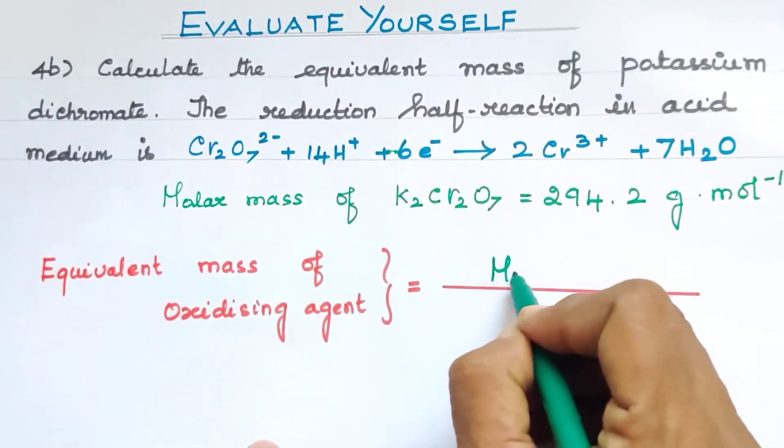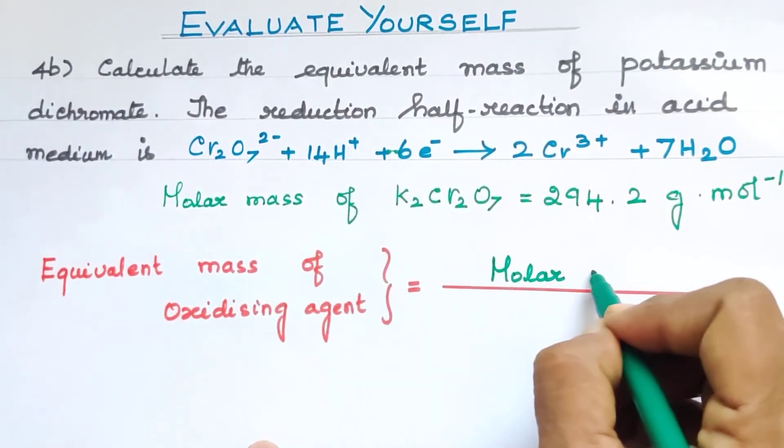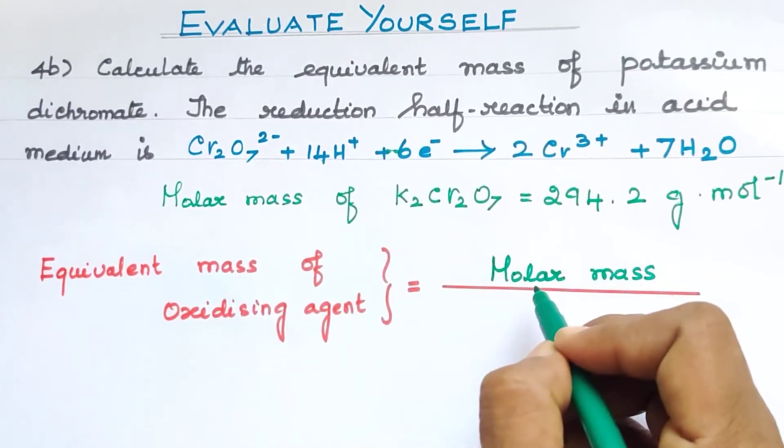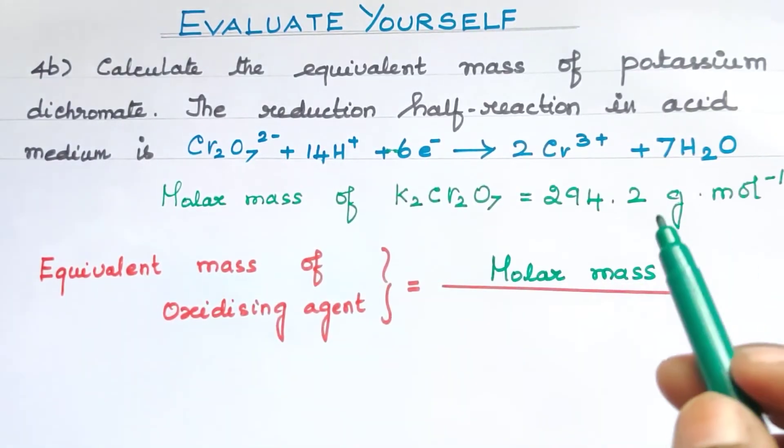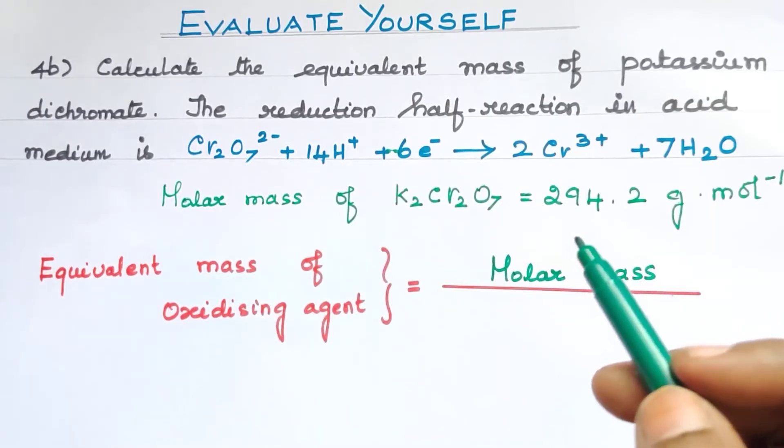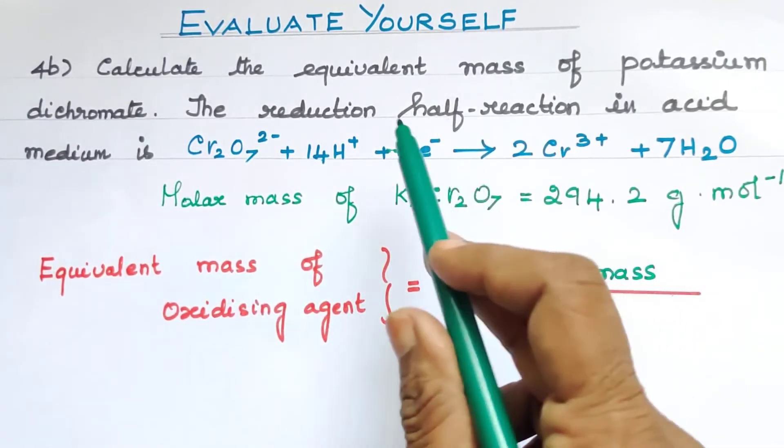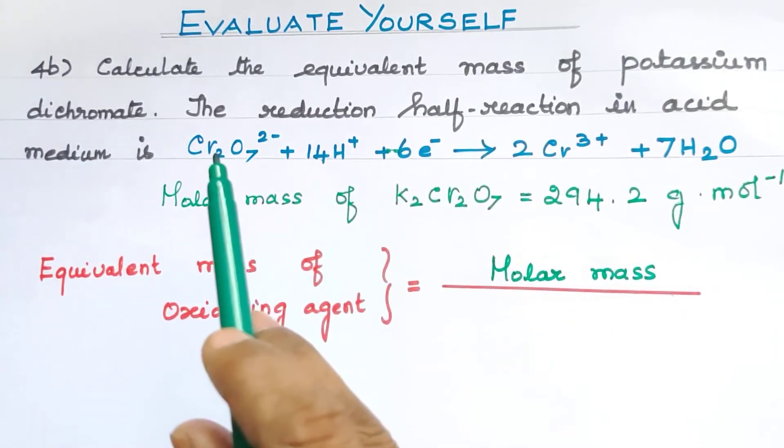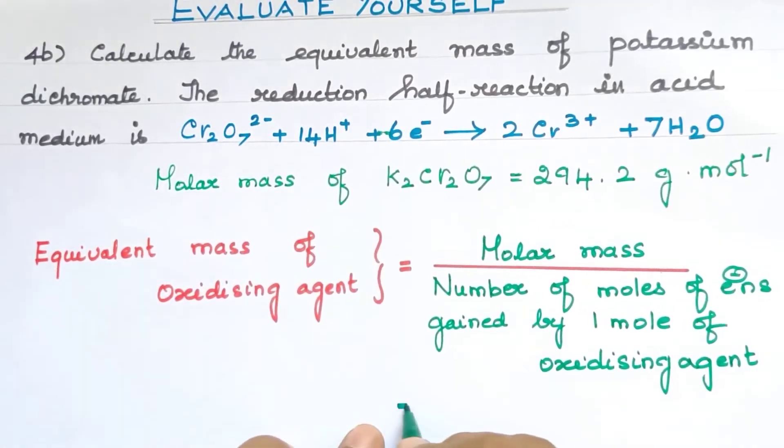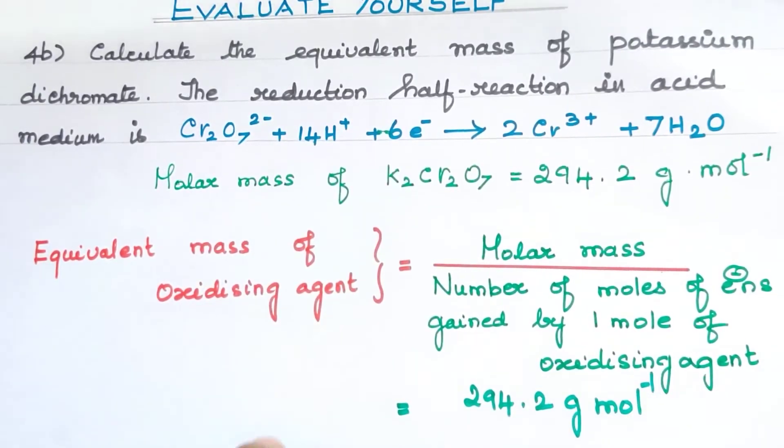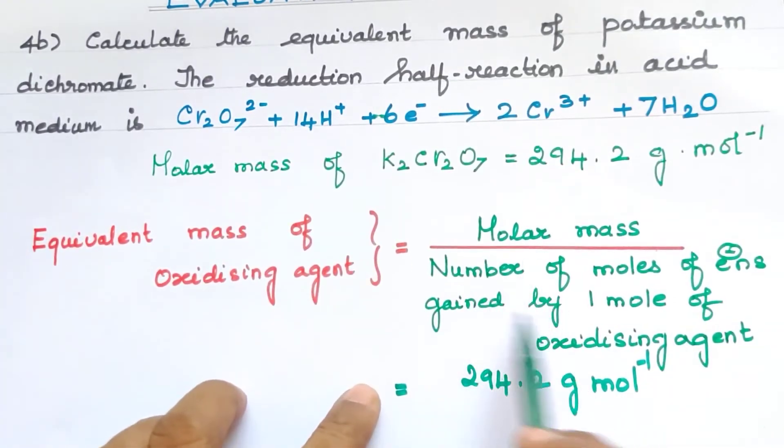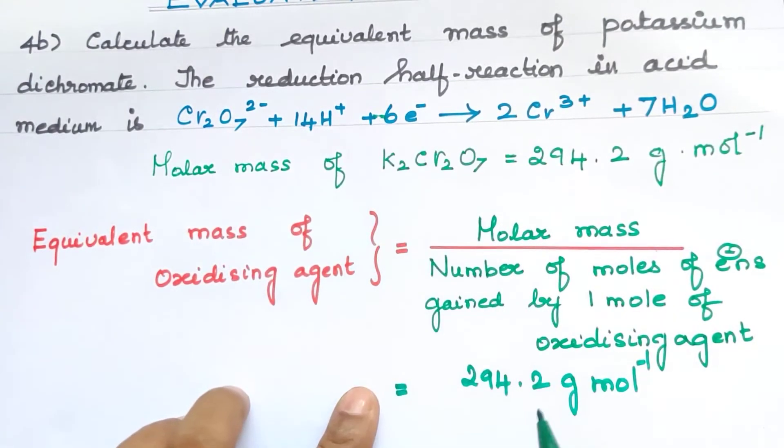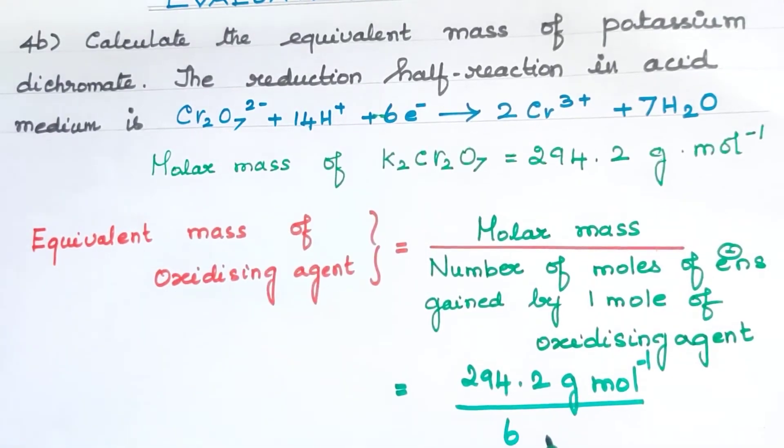Equivalent mass of potassium dichromate equals molar mass of K2Cr2O7 divided by the number of moles of electrons. The molar mass is 294.2 grams per mole. The equivalence factor, the n factor, is 6.